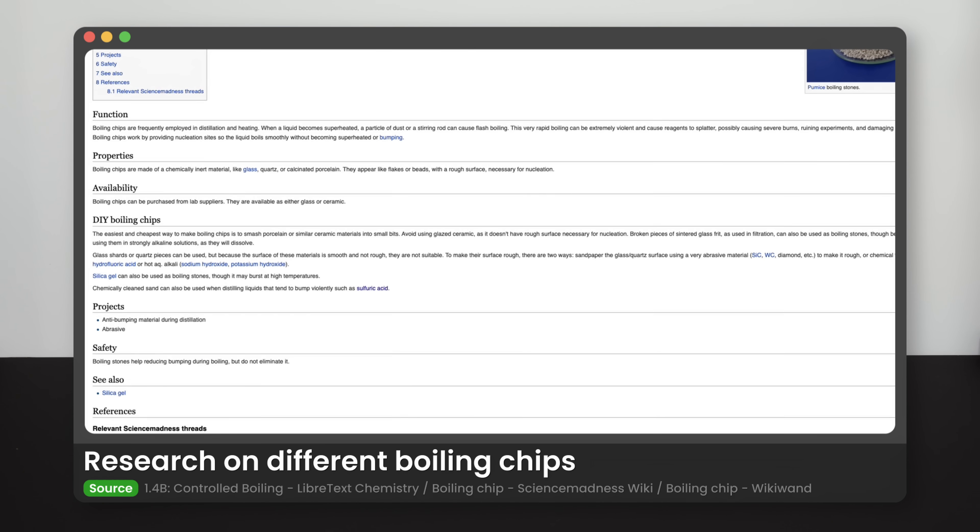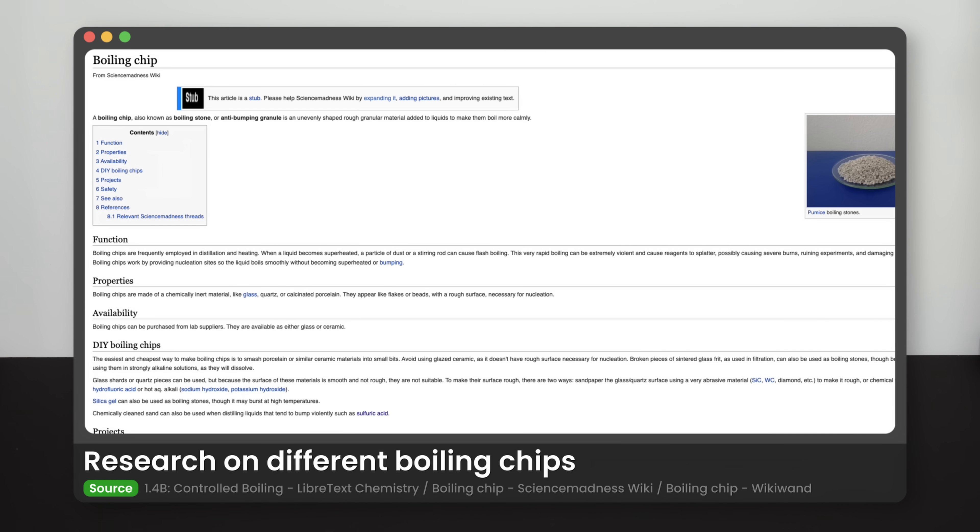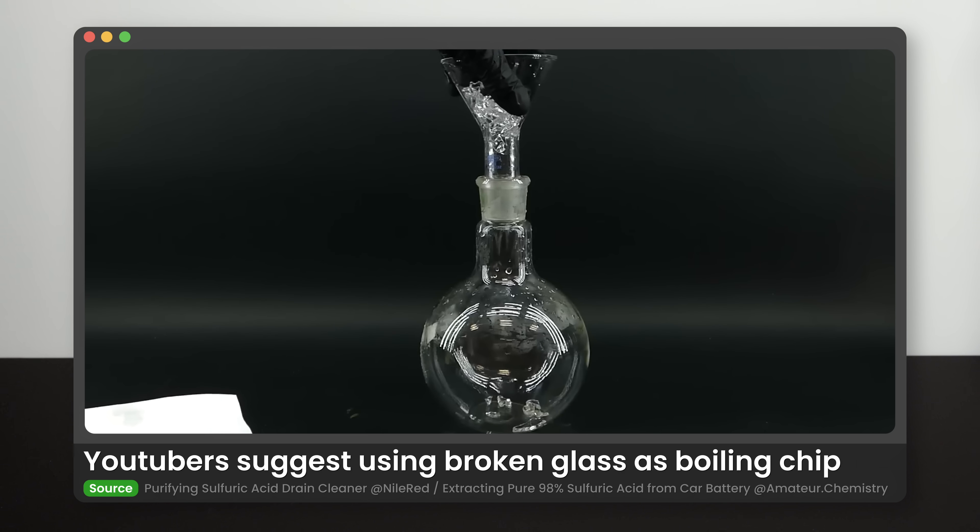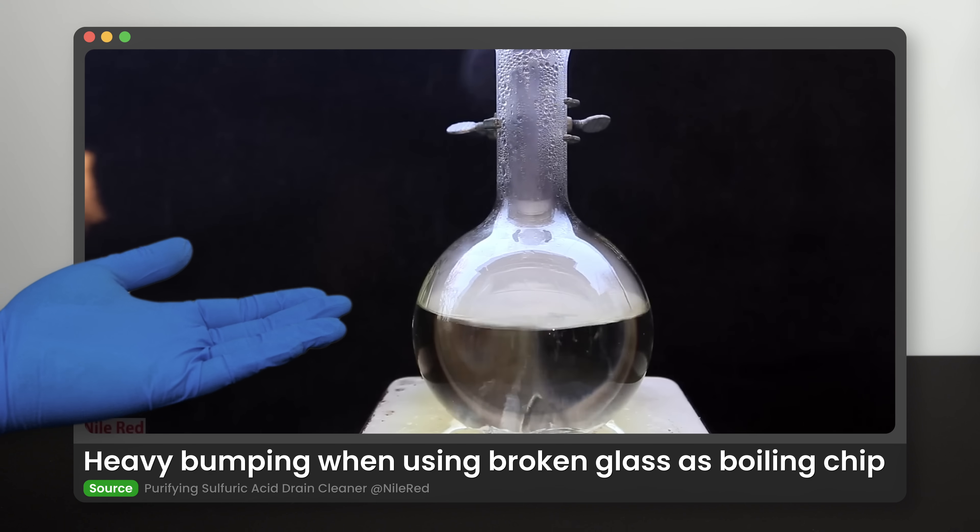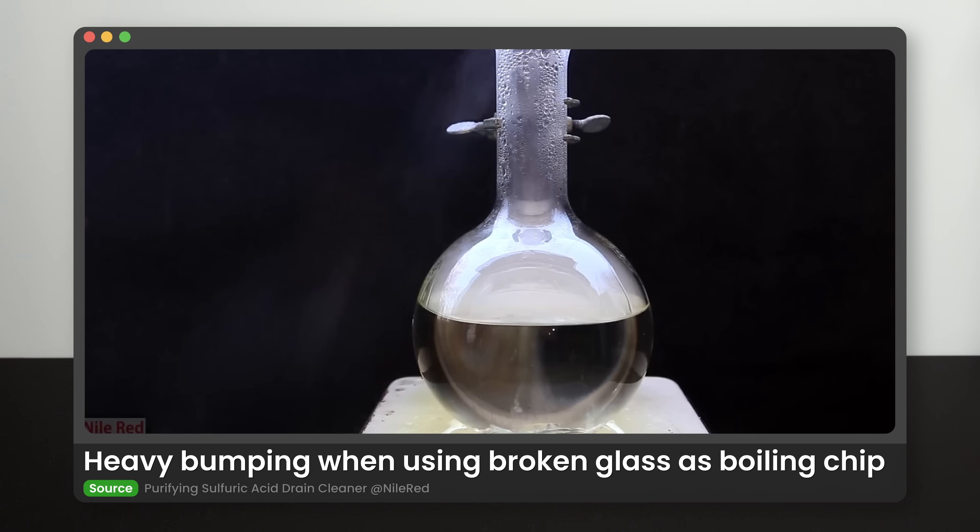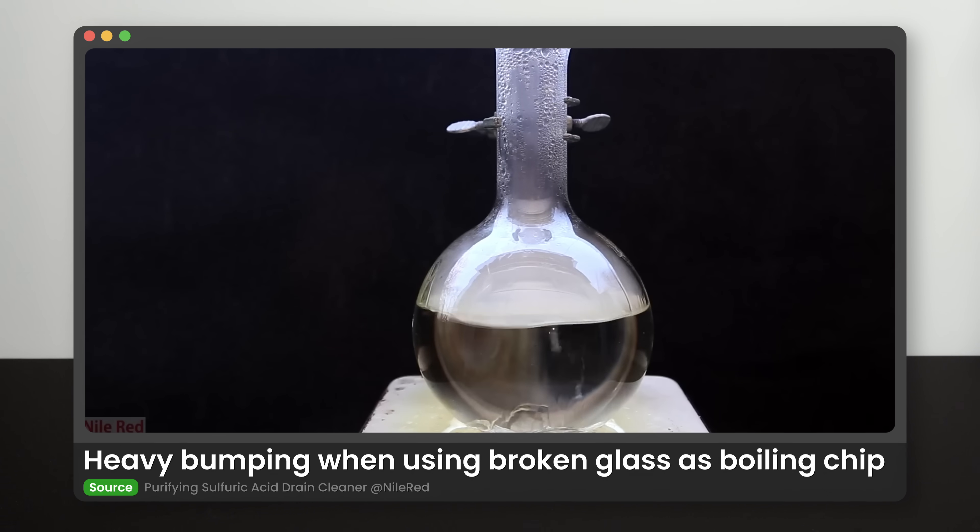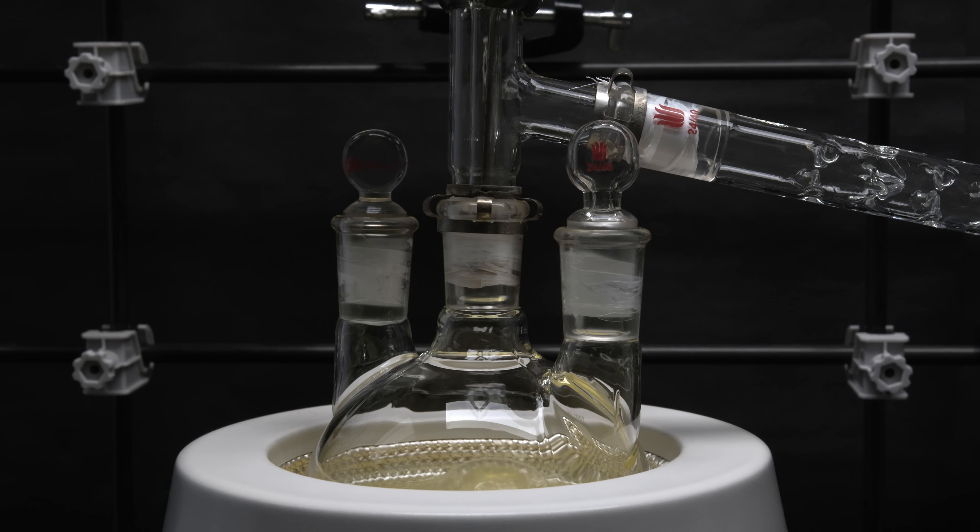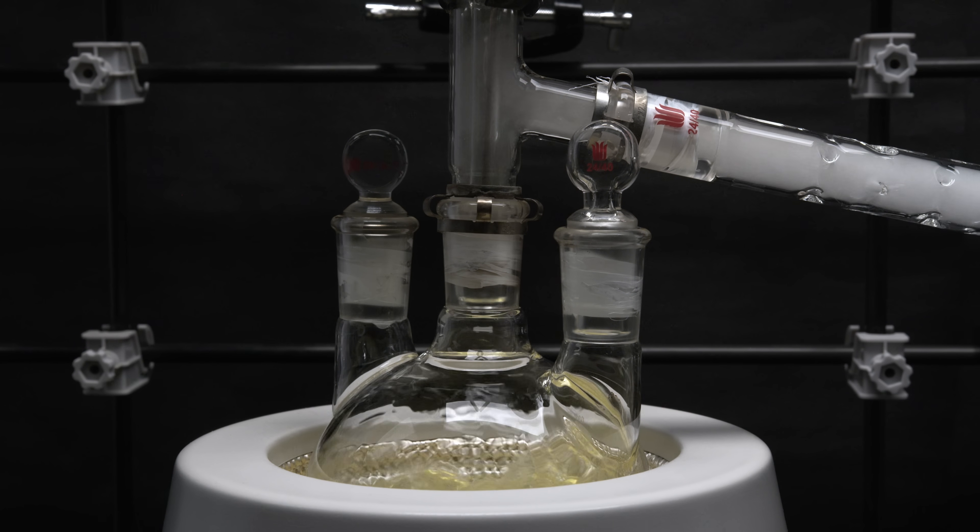But I will also show some of the other boiling chips that I have tested and show you the difference. The first one is broken glass. It is suggested by some other youtubers. But as you can see from their footage and my experience, it just worsens the situation and increases violent bumping. My theory is that the glass not only doesn't provide a nucleation site for smooth boiling to occur, they are even creating uneven hot spots to induce the most superheating spots in the solution.